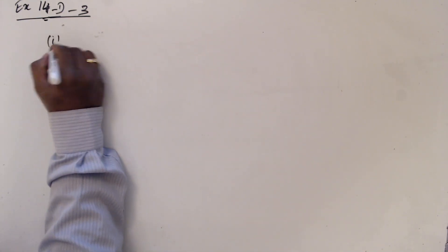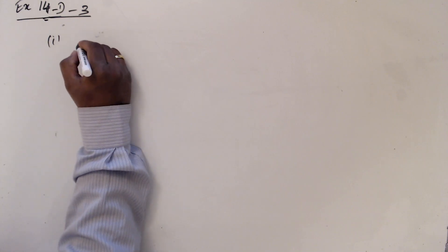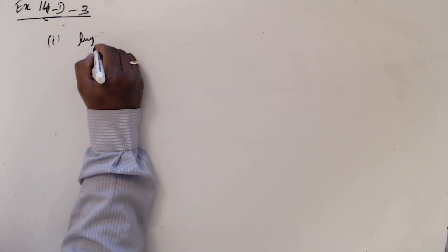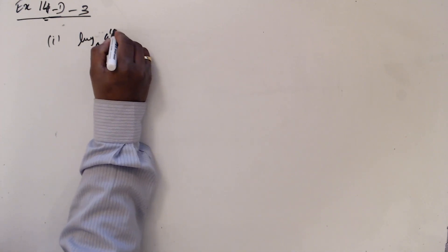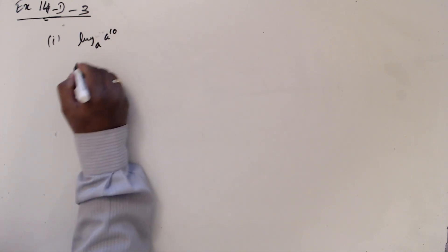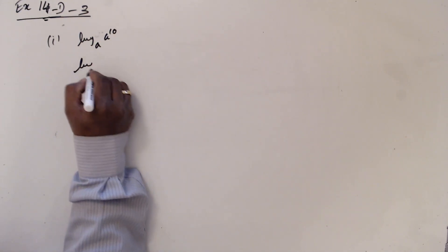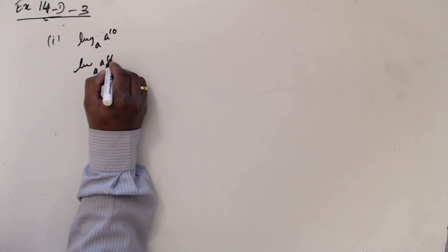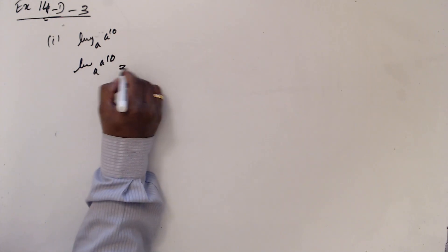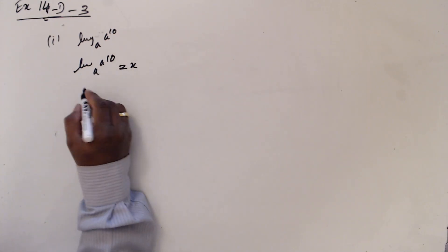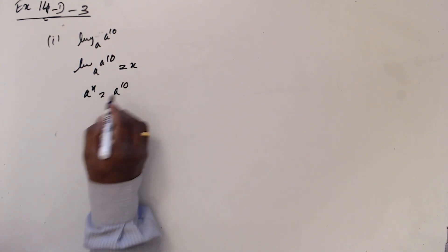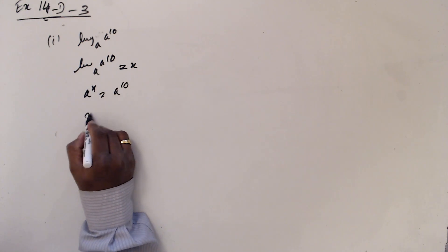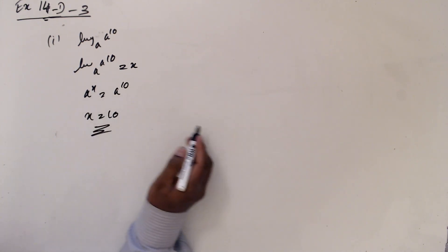So log to a base of a to the 10 — log base a of a to the 10 equals x. So a to the x equals a to the 10. It means x equals 10.